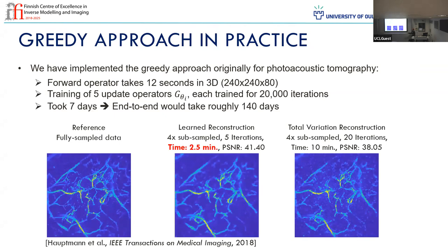The results actually look nice. We have sample reference data — this is really the reconstruction from full data, and we can see the vessels here. This would be the reconstruction from subsampled data. We checked 20 iterations as a reference, and here we have our learned reconstruction, which is nice. At least practitioners like this. But you see there's still a problem — still two and a half minutes reconstruction time. We managed to get from 10 minutes down to two and a half minutes, but that's not exactly what we were planning for — we wanted to be faster.